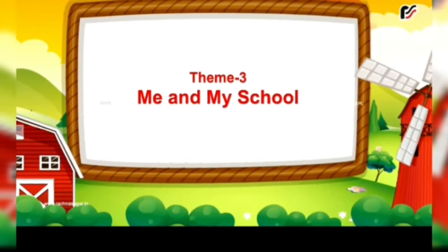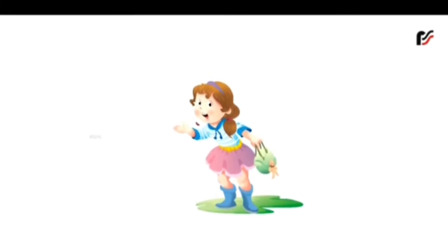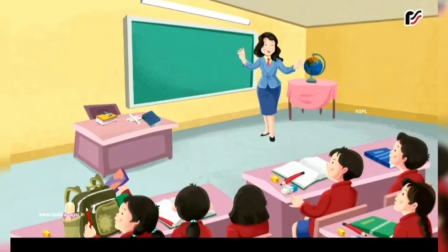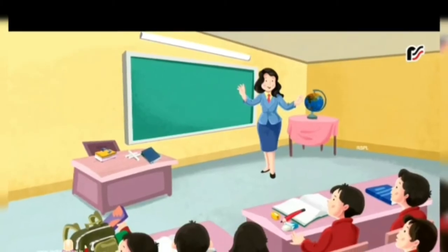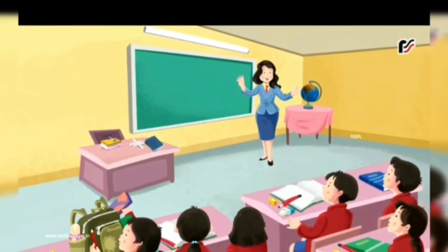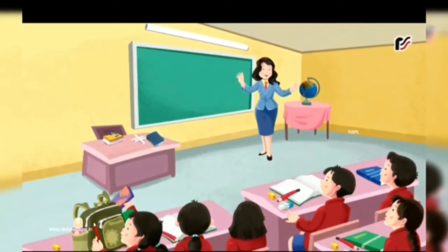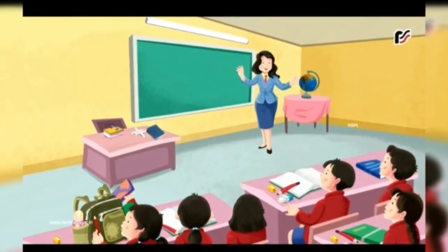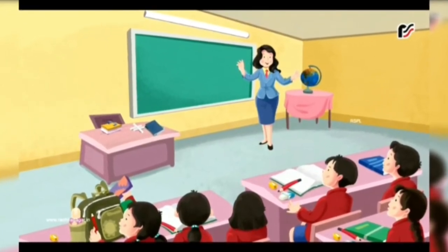Theme 3: Me and my school. Hello everyone, I am your friend. What are you doing? I am going to school. Would you like to visit my classroom? Come on, I'll show you. I have a wonderful classroom. This is my classroom. Let's have a look at the things in my classroom. There are many things in my classroom - mere classroom mein bohot si cheezein hain. I'll show you.